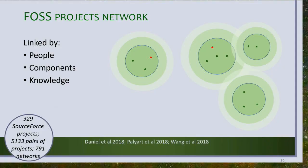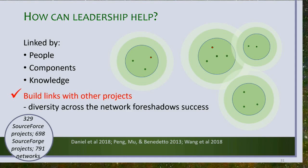FOSS projects also network via people, via componentry, and via information. People working on one project also working on another builds their knowledge and brings new ideas into your project. Using componentry allows you to learn more from other projects because the code base is generally open. Cross-linkages between your project and other projects are a major success factor in FOSS projects, primarily assisting through information sharing. But those linkages also create stakeholder relationships, and we're going to talk about that right now.